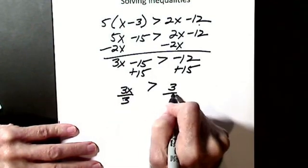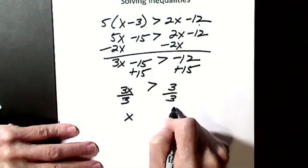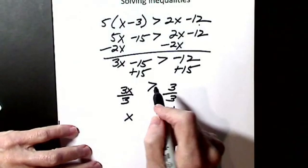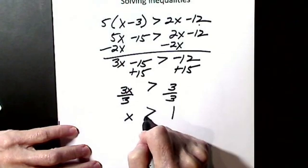Now I'm going to divide by 3. Here's my x, here's my 1. Did I divide by a negative? No. So if I don't divide by a negative, it stays the same.